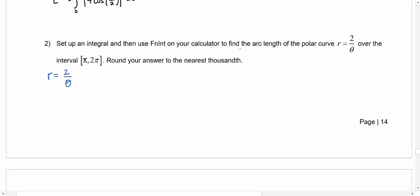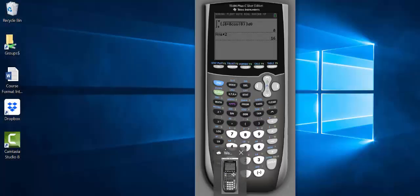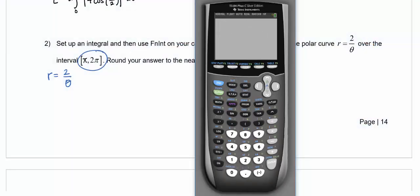R is 2 over theta in this example and this one specifically does say set up an integral and then use the function integrate on your calculator to find the arc length of this polar curve. And I'm only going from pi to 2 pi. So again, we can certainly find a picture. So let's go to our graphing calculators and we will input a picture just so I get a good idea what it looks like. So R equals 2 over theta.